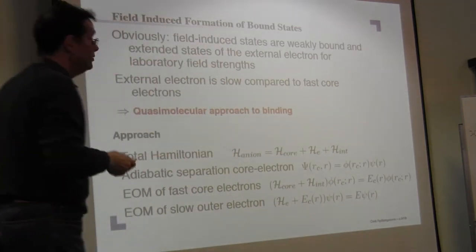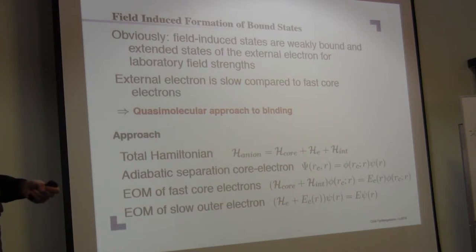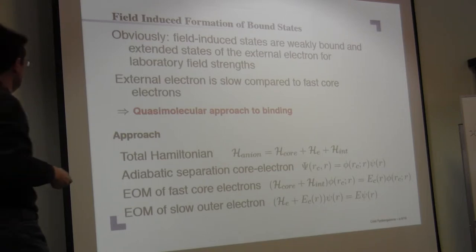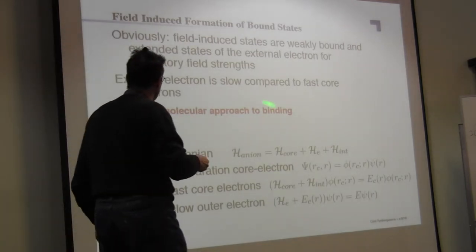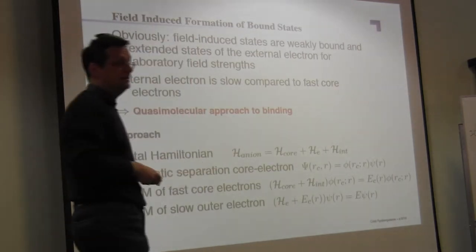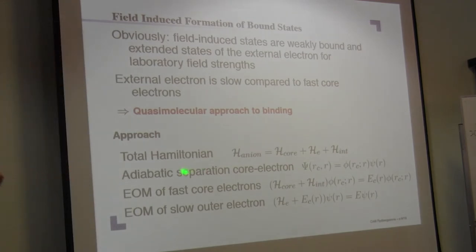But again, you can separate between a slowly moving outer electron and a core where everything is moving fast, where the electrons are moving fast. That's why you can make a quasi-molecular approach to this binding.